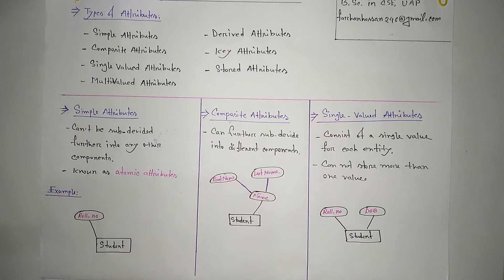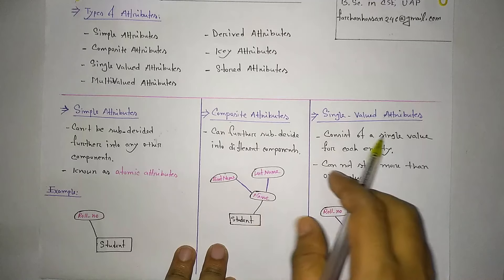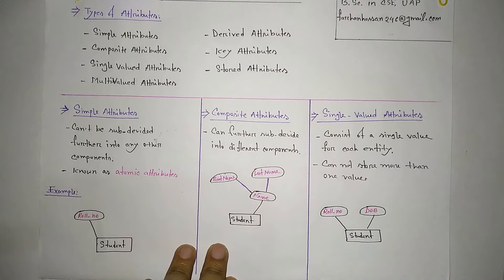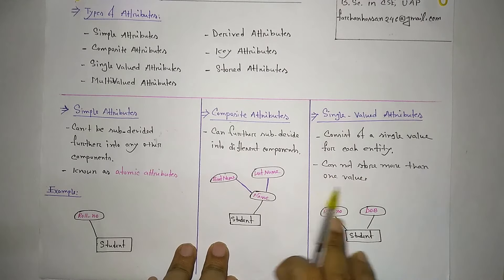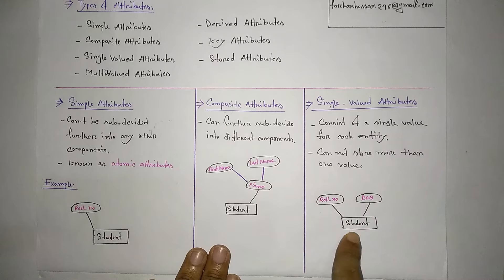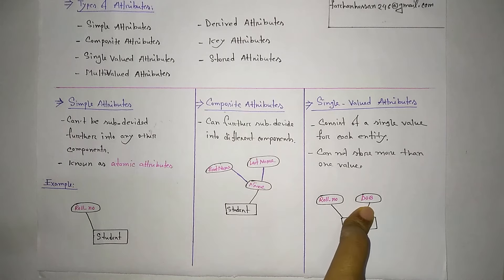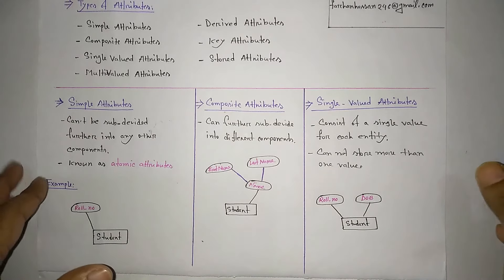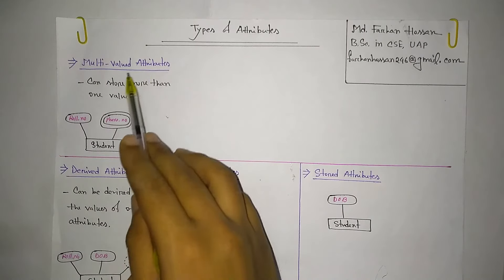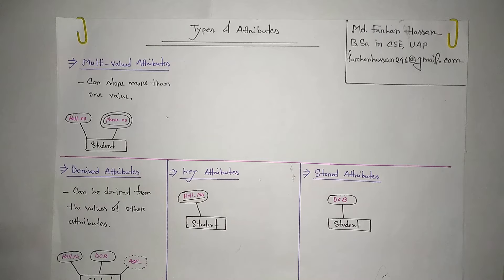The date of birth attribute for a student is a single-valued attribute, because each student has only one date of birth. Similarly, roll number is also a single-valued attribute — it stores only one value per entity and cannot store more than one value.